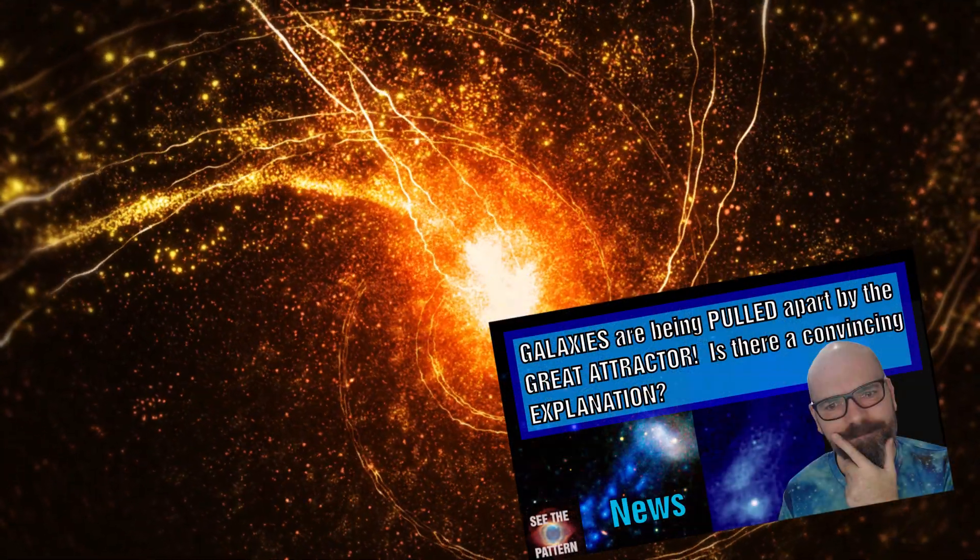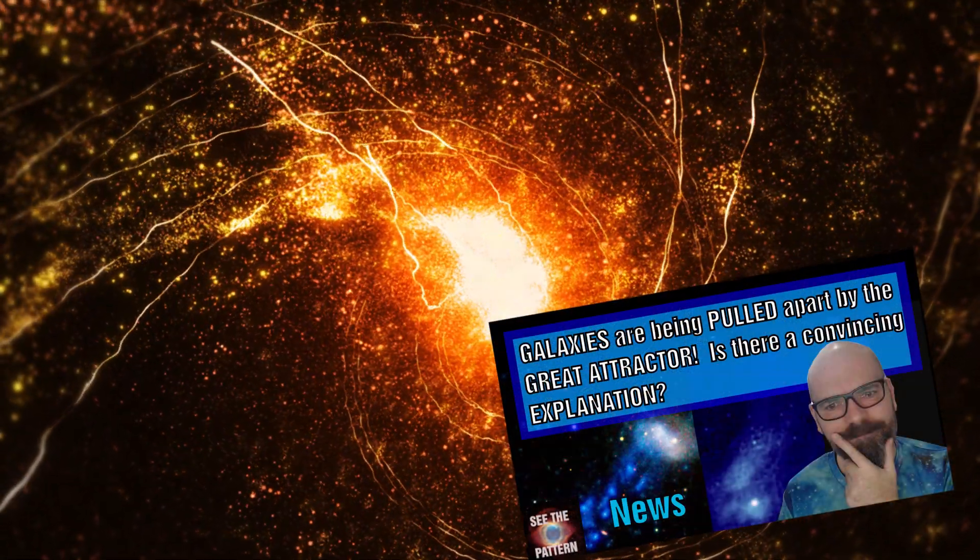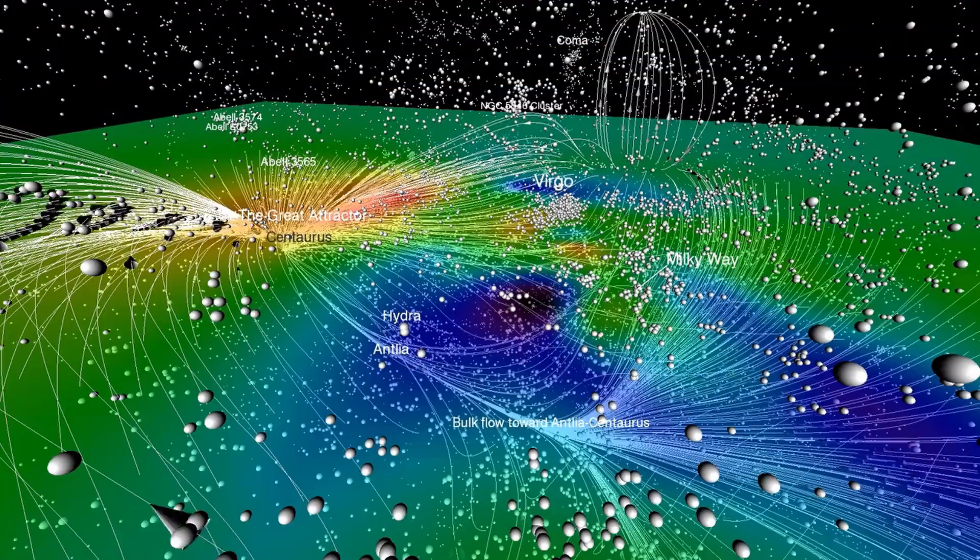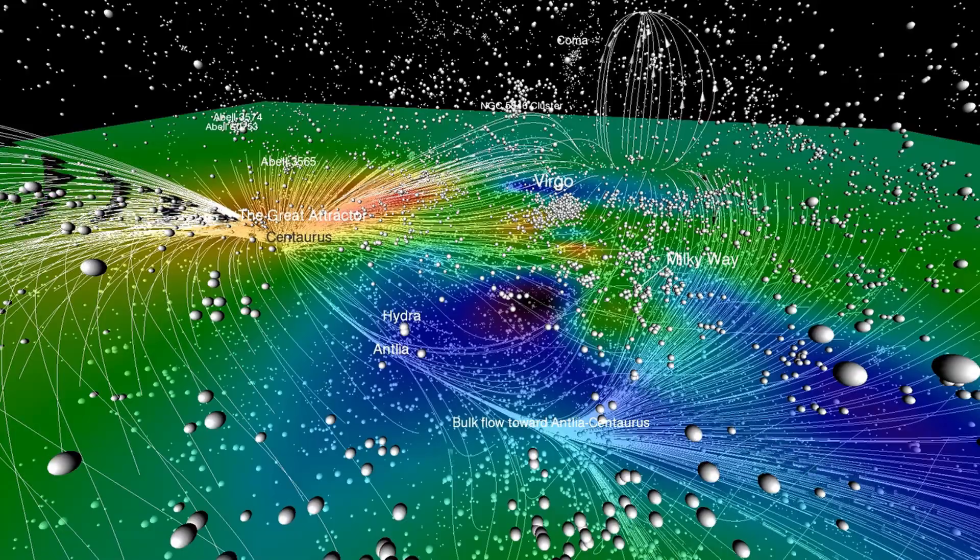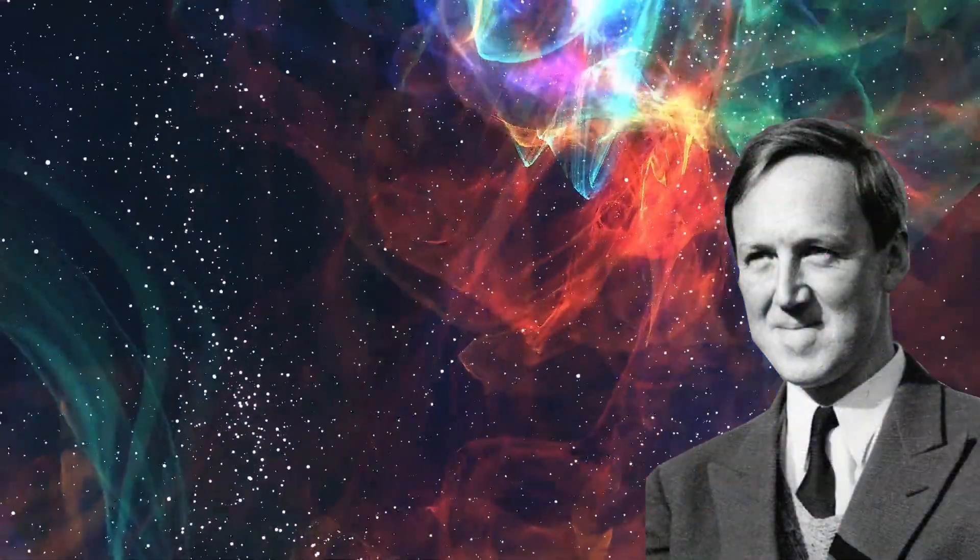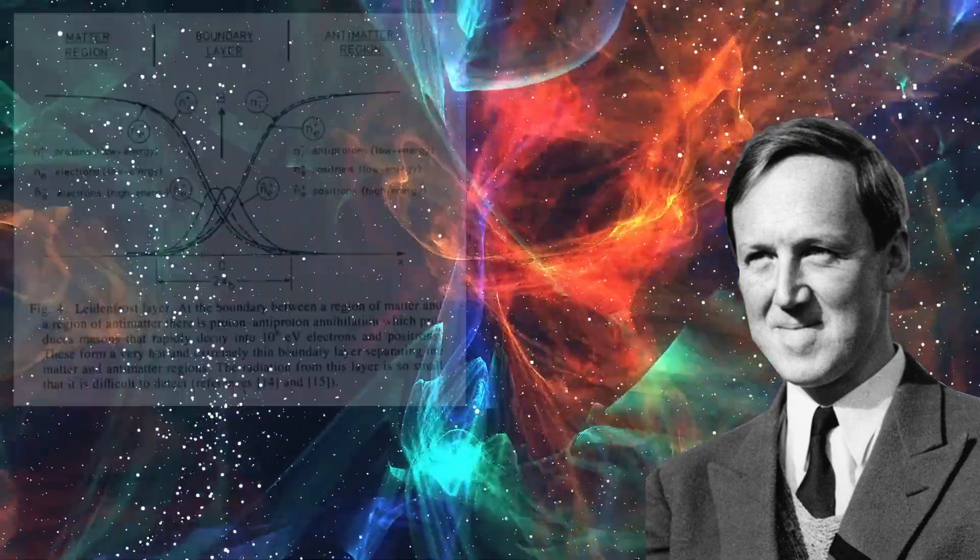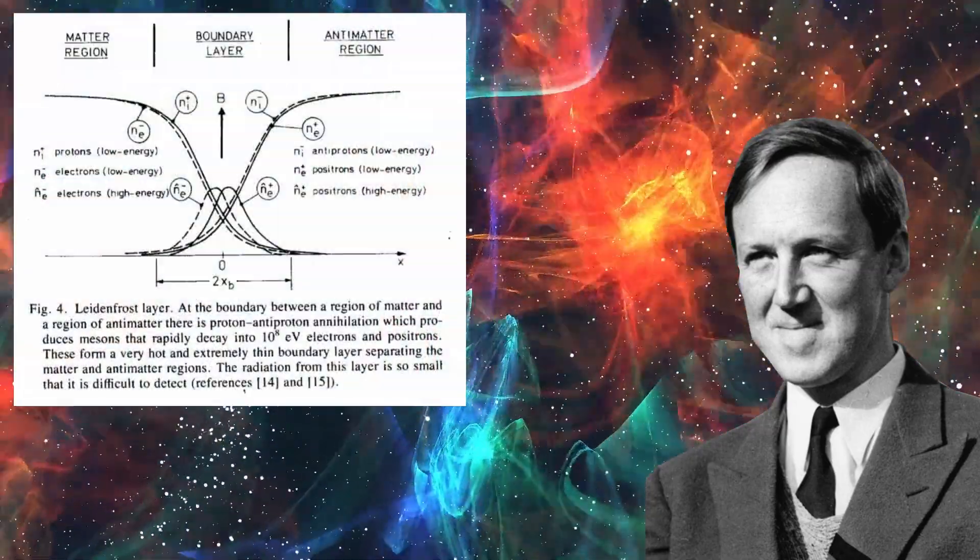I've recently discussed the possibility that there may actually be antimatter galaxies which were being ripped apart as they are pulled towards the great attractor. Alvin's view was that the universe consisted of equal amounts of matter and antimatter and that they were potentially separated by a Ladenfrost layer.